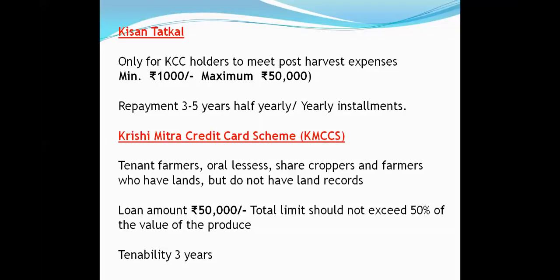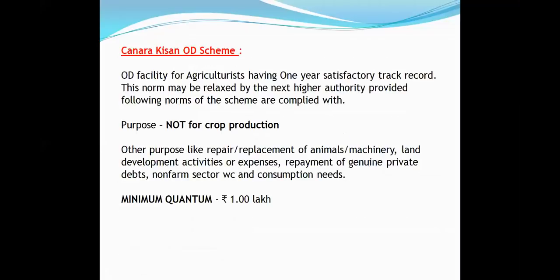Kisan Tatkal: maximum ₹50,000. It is for post-harvest expenses only. Minimum ₹1,000, maximum ₹50,000, repayment 3–5 years. Krishi Mitra Credit Card: maximum ₹50,000 — for lessees, sharecroppers, poor/small farmers. Tenability is 3 years. Remember: always 50% produce value will be the security value — if you sanction ₹50,000, security value should be ₹1 lakh.